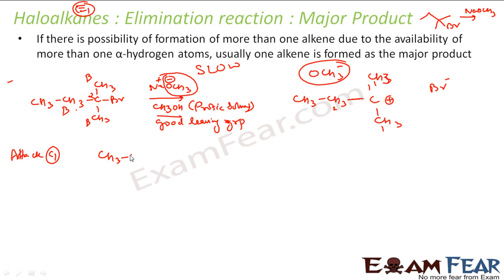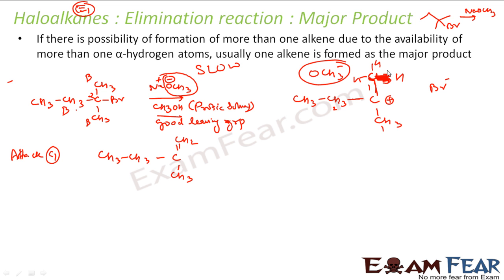If the base attacks carbon 1, the product formed is CH3-CH2-C(CH3)=CH2 — a terminal alkene with two alkyl groups on the double bond carbons. If instead it attacks carbon 2, the product formed is CH3-CH=C(CH3)2 — an internal alkene with three alkyl groups attached to the double bond carbons. In that case the hydrogen gives its electrons to form the double bond and the H⁺ leaves. These are the two possible products.